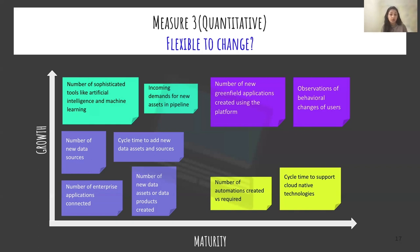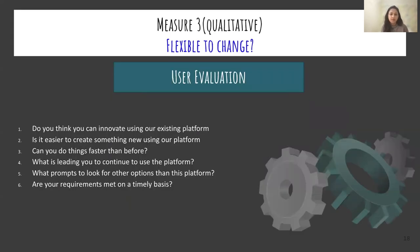We also record observations on behavioral changes — if you cannot move to a new technology, how does it impact your users? Do they move out, create their own platform, or stop using the platform? Qualitatively, questions to ask include: can they innovate using our platform? Is it easier to create something new? And what prompts them to look at other options? These questions help understand how users react to the flexibility of the platform.